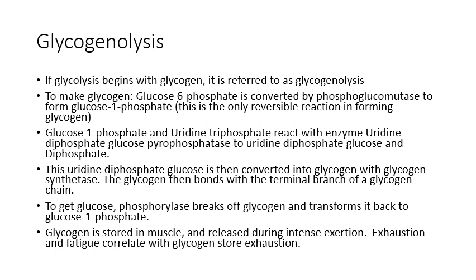Glycogen is a storage form of glucose — the way muscles store glucose within their tissue — and it's readily available to enter metabolic pathways. To make glycogen we take glucose-6-phosphate from the first step of the glycolytic pathway and add phosphoglucomutase to move the phosphate group from position 6 to position 1, giving glucose-1-phosphate. This is a reversible reaction.